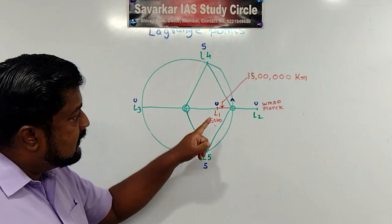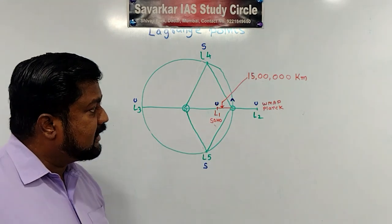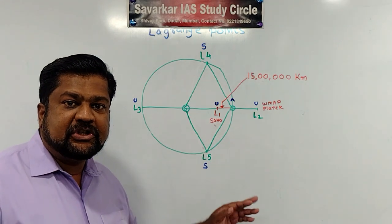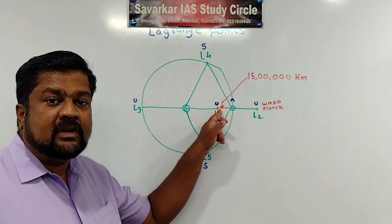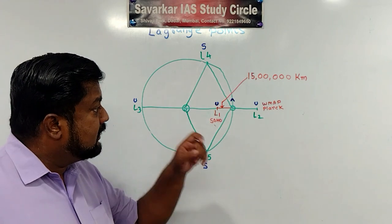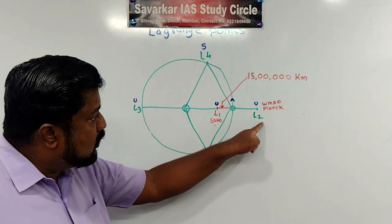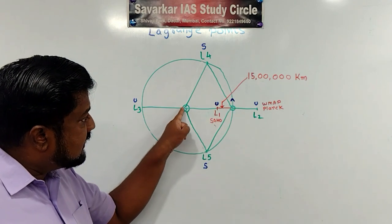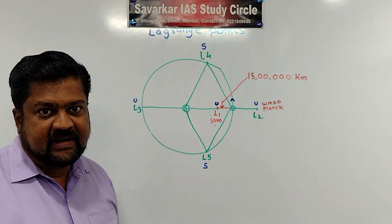Here I have shown L1. The L1 point is shown in red color because our Aditya mission is going to launch here. So this is L1 point. This is L2 point. See, Earth and Sun. L1 is between Earth and Sun.